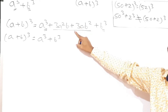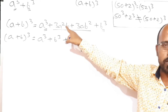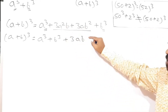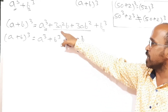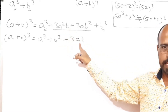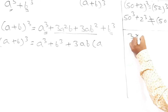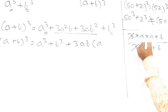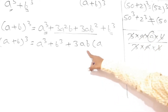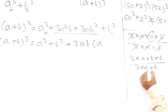Common between coefficients: 3 is common, so plus 3. Between variables a squared and a, a will be common. Between variables b and b squared, b will be common. So 3ab is the common factor. Dividing 3a²b by 3ab gives a. Similarly, dividing 3ab² by 3ab gives b. So here it will remain plus b.